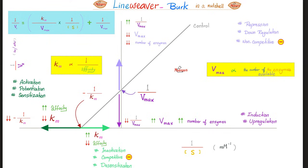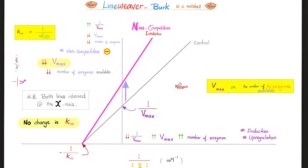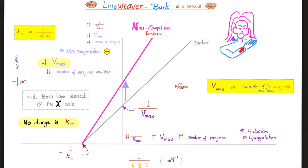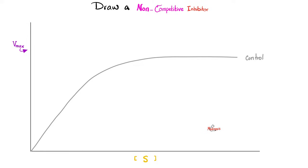Now let's do the Lineweaver-Burk plot. Note that this axis shows 1 over Vmax, not Vmax itself. If you want Vmax to go down — as with Nancy the Karen — this point on the y-axis will go up, because it's the inverse. The y-intercept goes from the original point upward, because Vmax is going down. The gray line is the original; the pink line is after adding Nancy the Karen. Unlike competitive inhibitors where both graphs met at the y-axis, today both graphs meet at the x-axis. You can imagine Nancy the Karen threatening to slit your throat horizontally — that's why both graphs will meet on the horizontal axis. Horrible analogy, I'm sorry, but it will help you remember.